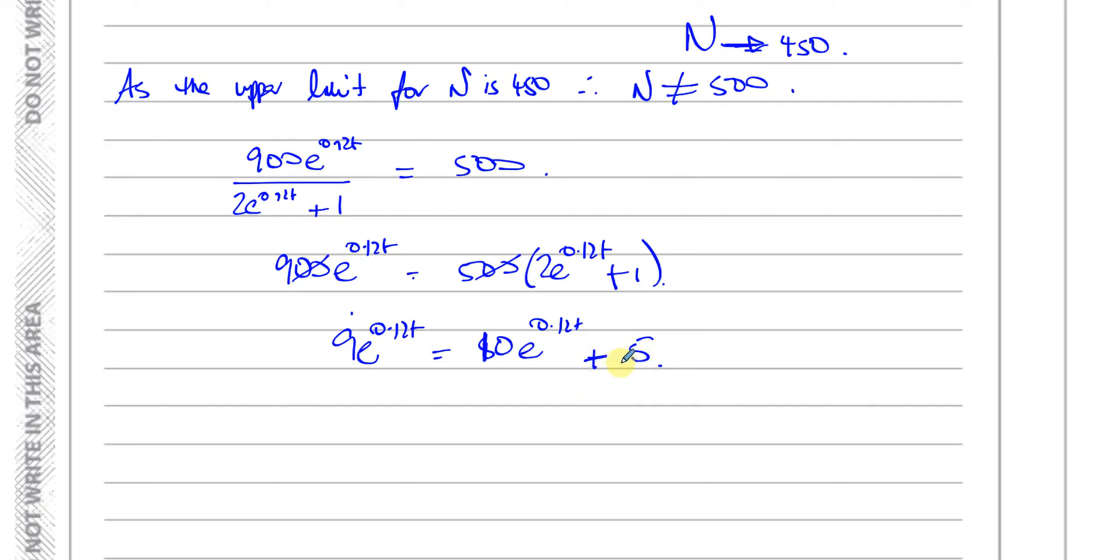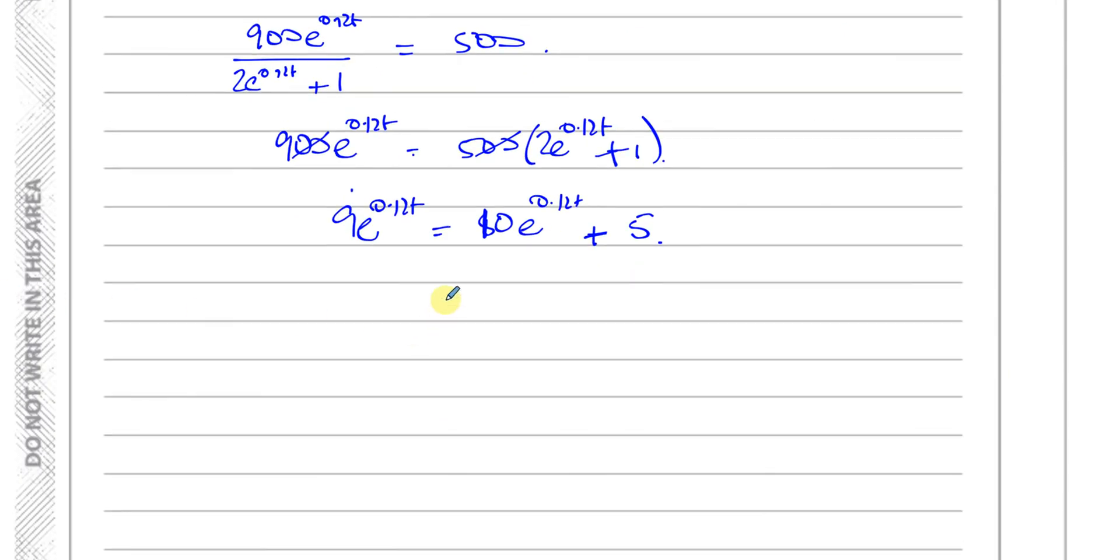If you try to bring these together on one side, you'll end up with minus 5 on this side, and you'll end up with e to the power of 0.12t. So e to the power of 0.12t equals minus 5. There's no solution. Because e to the power of something will never reach negative 5. If you try to solve it, you'll have 0.12t equals ln of negative 5. This is undefined. So no solution.